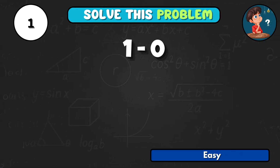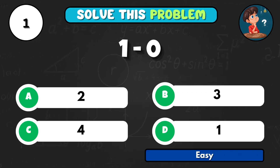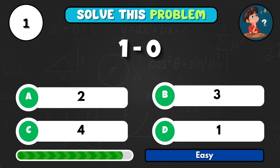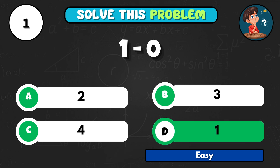What is 1 minus 0? The correct answer is D1.